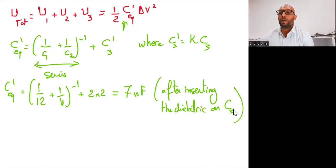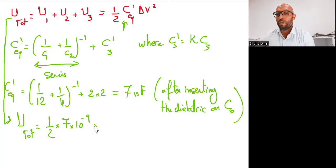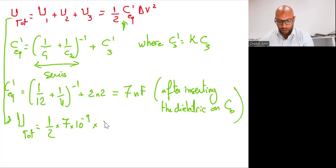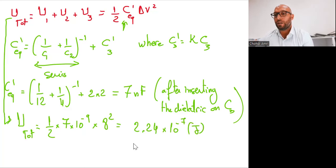After inserting the dielectric on capacitor C3, we come back to the energy equation. U total equals one half of C equivalent prime — which is 7 nanofarad — multiplied by delta V squared. The capacitors are still connected to the battery, so delta V remains 8 volts. The result is 2.24 times 10^(-7) joules. We are done with the problem. Thank you so much, see you in problem four.